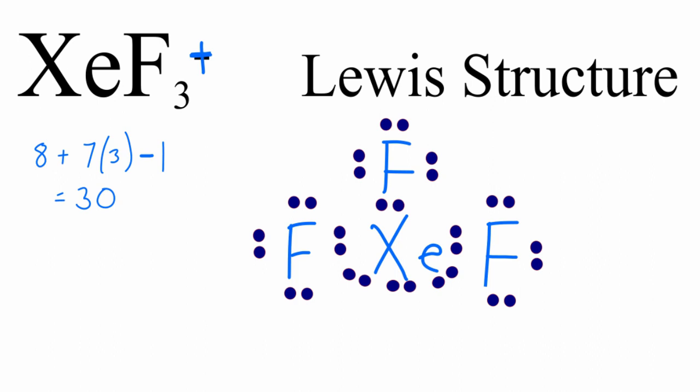And instead of having 30 valence electrons, we'll have 8 plus 21. That's 29 minus 1. We'll only have 28 valence electrons.